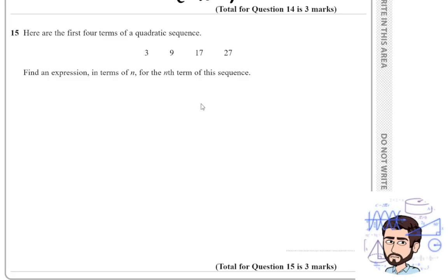Here are the first four terms of a quadratic sequence: 3, 9, 17, 27. Find an expression in terms of n for the nth term of this sequence for three marks. Whenever I see a sequence question, especially an nth term question, I'm always thinking how much does that sequence go up by? That's going to be a key thing in this question.